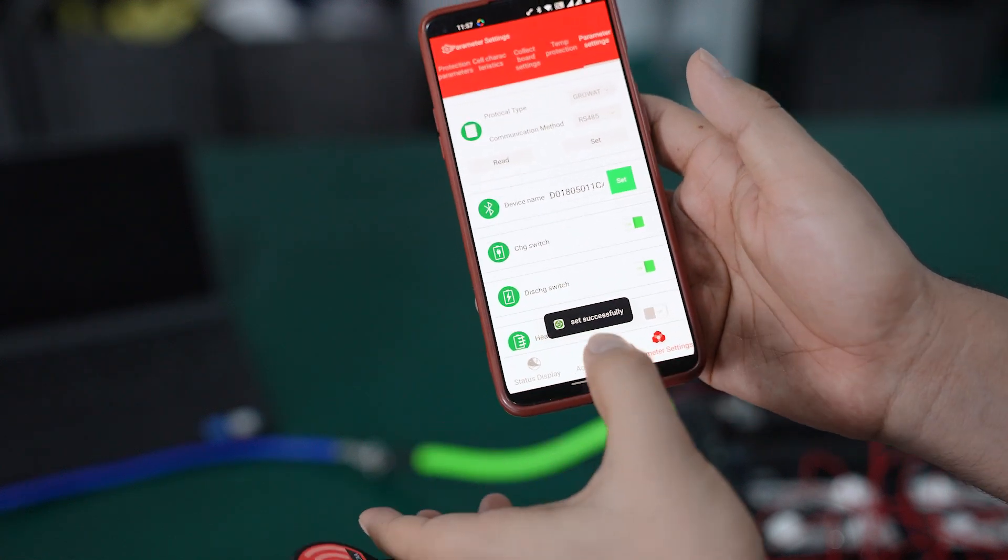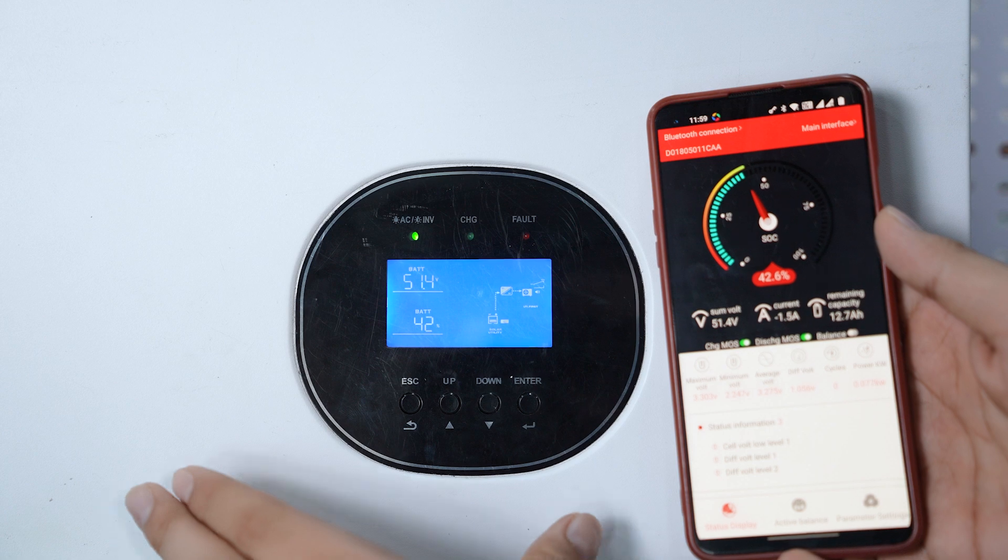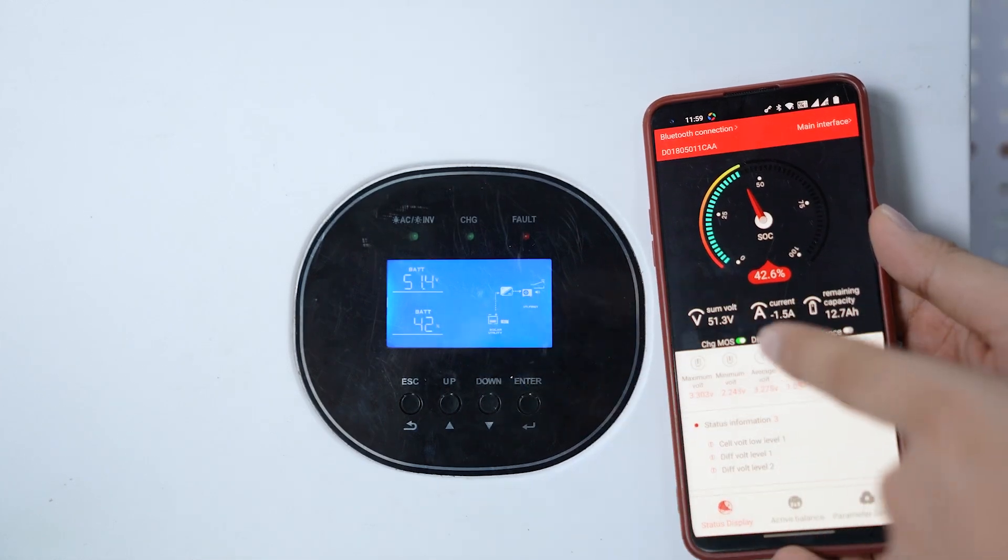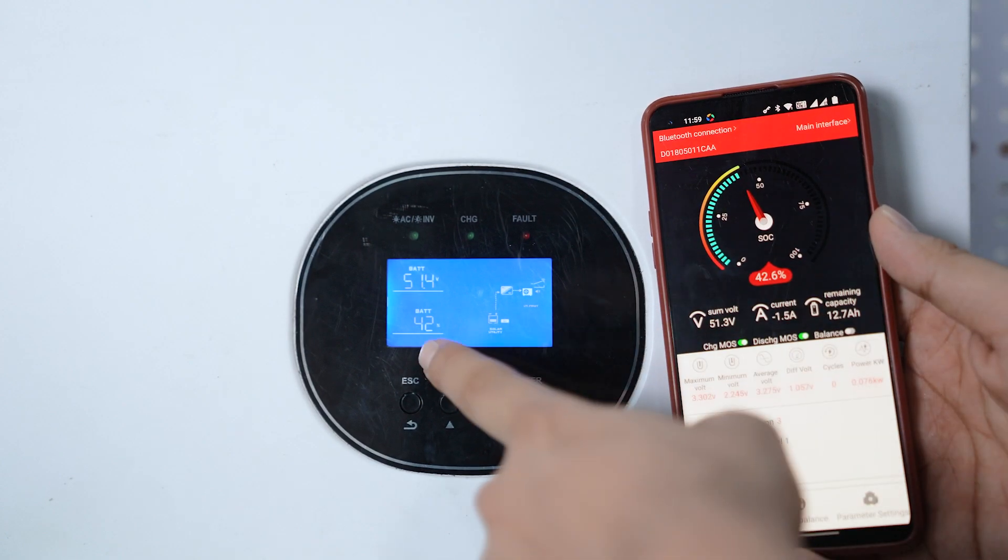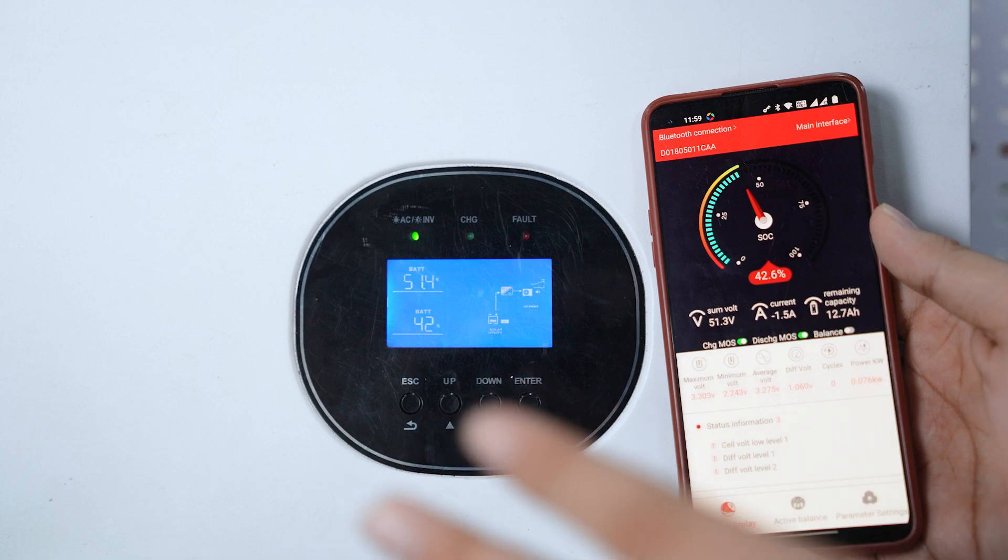You can see here that the voltage shown in the inverter and the app is the same: 51.4 volts. The SOC is 42% here and the same is shown on the inverter, so the BMS and inverter are correctly connected.